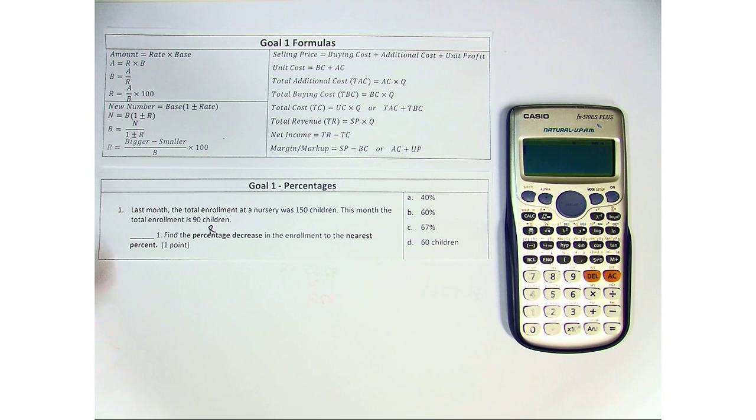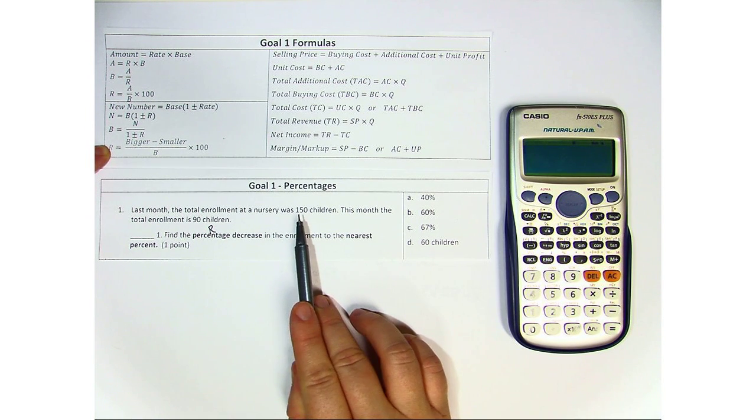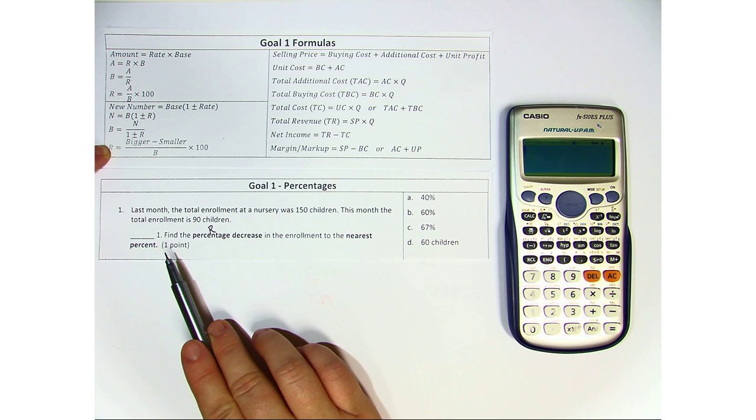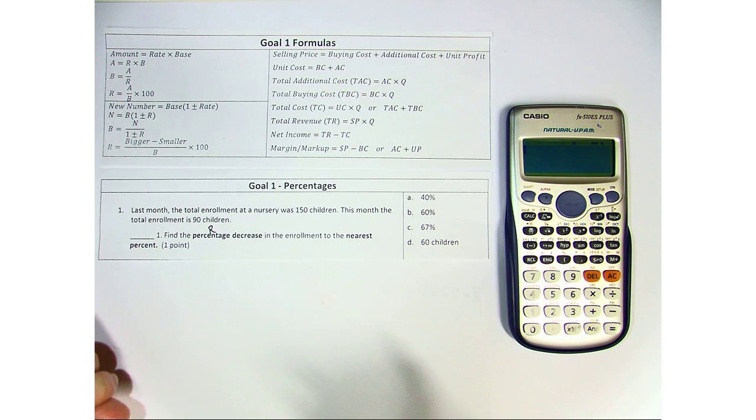We're going to look at this formula, and the main reason is because we don't have an amount and a base—we've got two changes. So, find the percentage decrease in enrollment to the nearest percent.